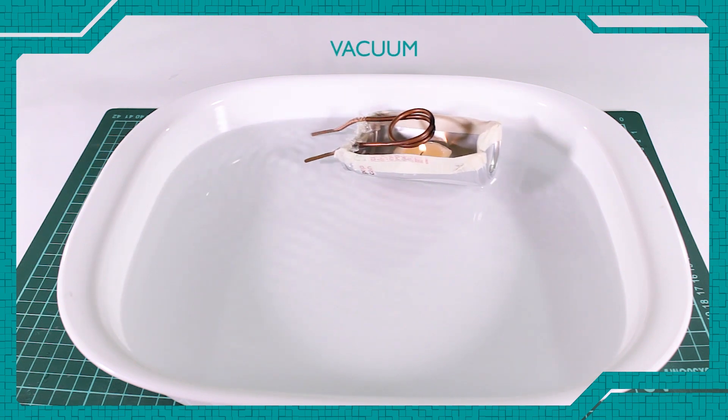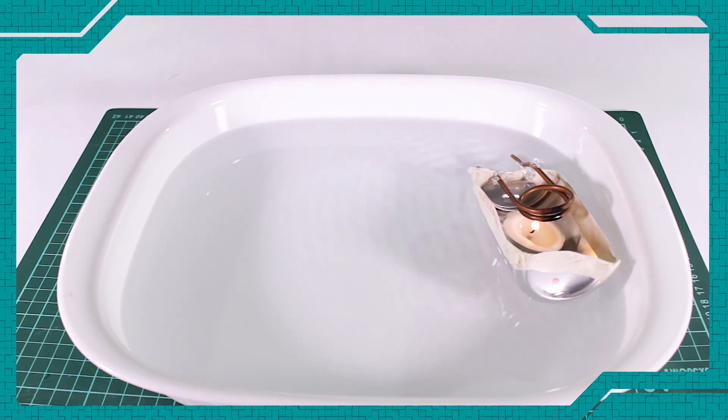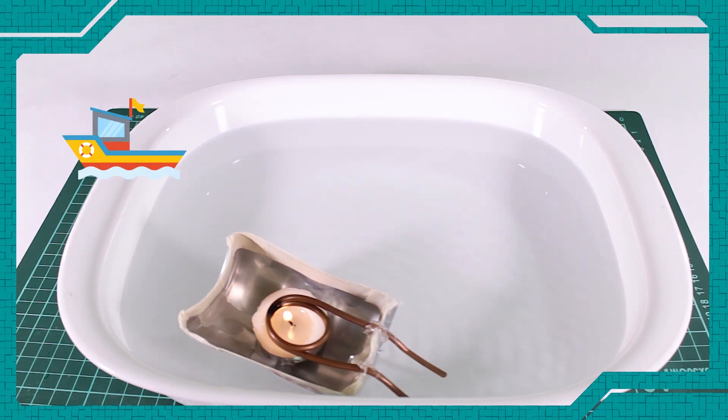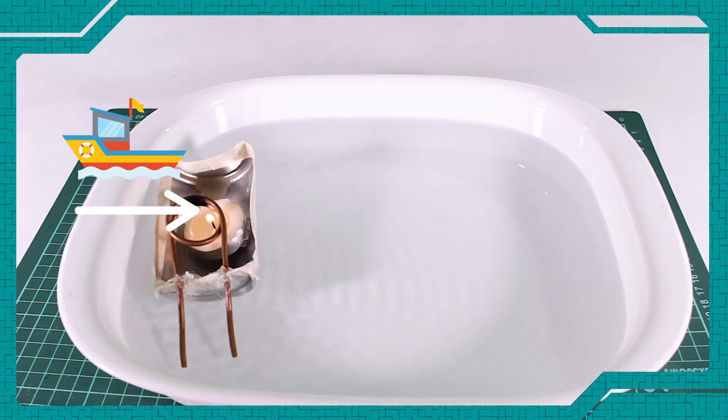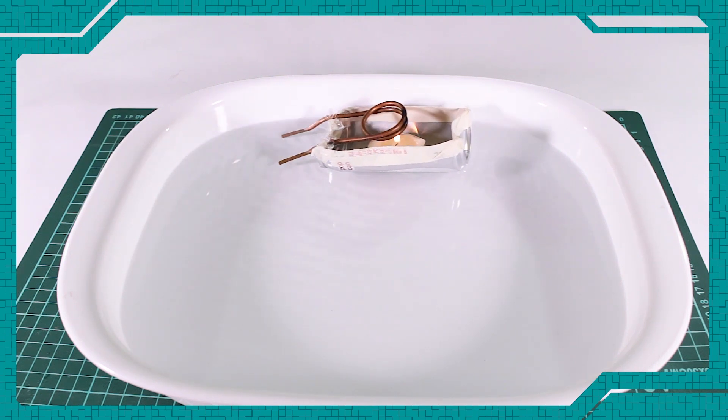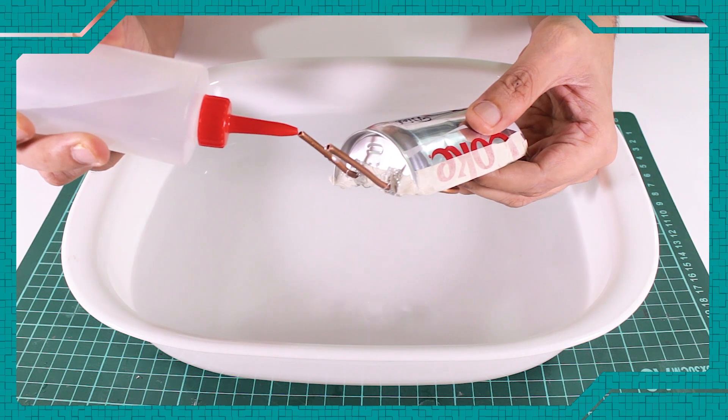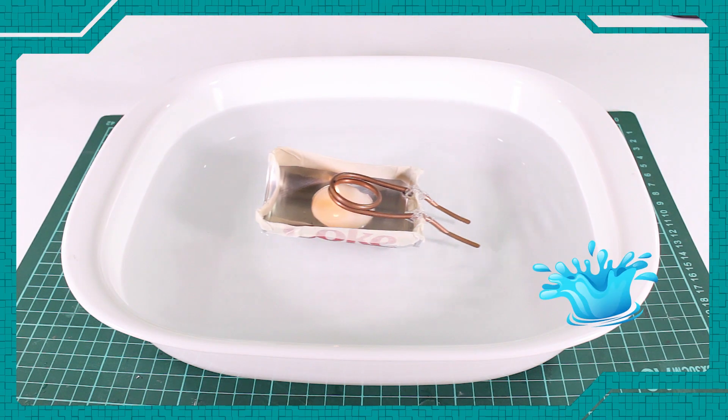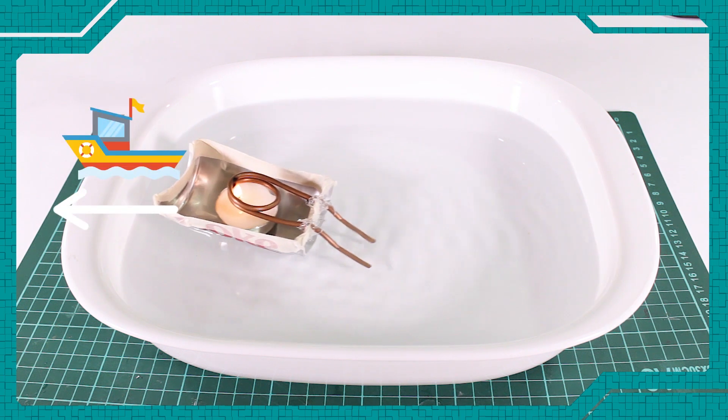This causes a vacuum to form which pulls more water back into the tubes. You would expect that the water moving back into the tubing would cause the boat to go backwards. However, the water doesn't get very far before it hits the end of the tube. The two streams of water in the two tubes meet each other in the coil. Any motion caused by the water being sucked into the tubes is reversed by the water hitting the front of the tube and pushing the boat forward again.